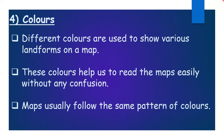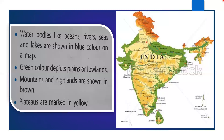Different colors are used to show various landforms on a map. These colors help us to read the map easily without any confusion, and maps usually follow the same pattern of colors. Water bodies like oceans, rivers, seas and lakes are shown in blue. Green color depicts plains or lowlands. Mountains and highlands are shown in brown. Plateaus are marked in yellow.